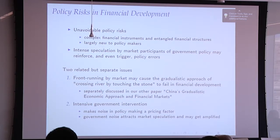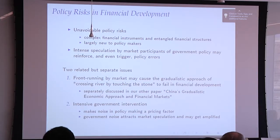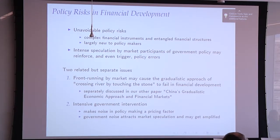That leads to the key issue we want to address in this paper: thinking about policy risk. The financial system has been identified as a key place for further development to boost the Chinese economy to the next level. But the system is much more complex than the real economy. The financial system provides very powerful liquid tools for speculation, and the intensive speculation by market participants on government policy may reinforce or even trigger policy errors.